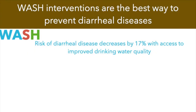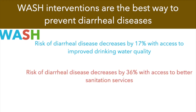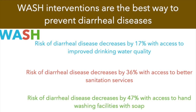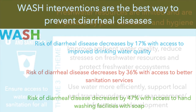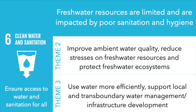The risk of diarrheal disease decreases by about 17% when a population has access to improved drinking water quality. The risk decreases by about 36% when there is access to better sanitation services, and by about 47% when there is access to handwashing facilities that include soap. This brings us to the other themes — how we can implement WASH initiatives and protect our ambient water resources while using water more efficiently.